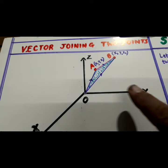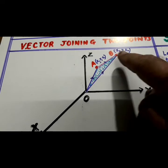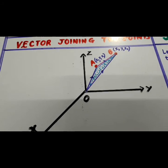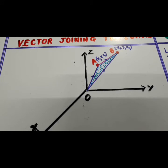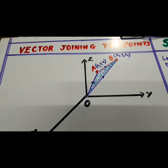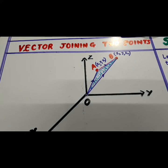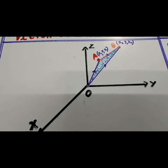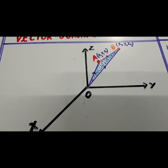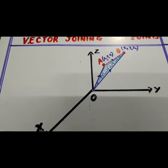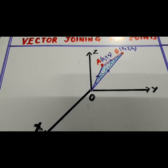A and B are two points. A is X1, Y1, Z1 and B is X2, Y2, Z2. We have to find the vector AB joining these two points. Now, if you join A with O, B also with O, then it has become a triangle OAB. Now, we will apply the triangle law. Look here.